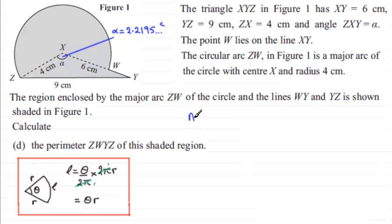So we've got the arc length is going to equal the angle and the angle is going to be this angle around here. Remember a full turn is 2π radians so the angle that we want is 2π minus the 2.2195 and so on radians that we worked out alpha to be in an earlier part of the question.